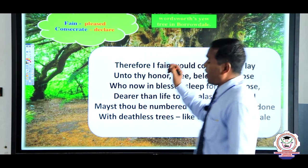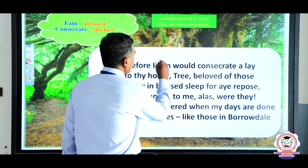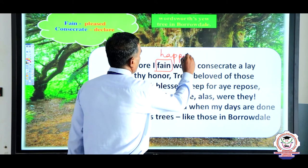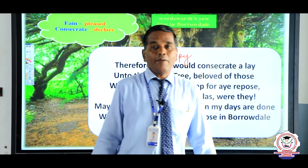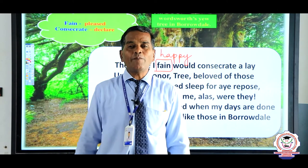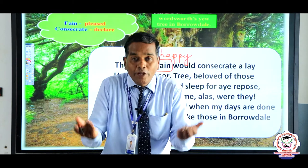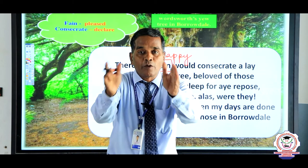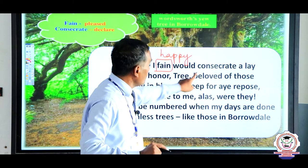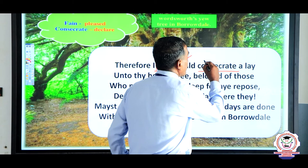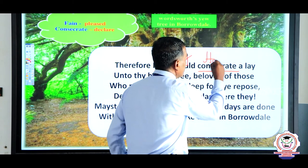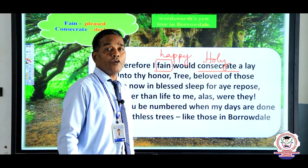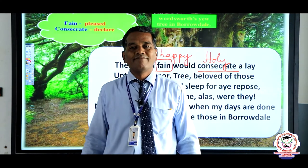'Fain' means happily, gladly. 'Consecrate' means to make holy, sacred — like abhishekam or kumbabhishekam. She wants to consecrate the tree — make it holy, give it immortal life so that even if she dies, the tree will be talked about by many people.